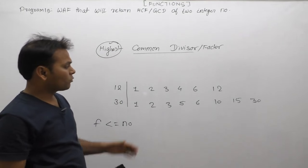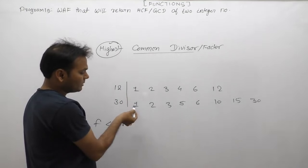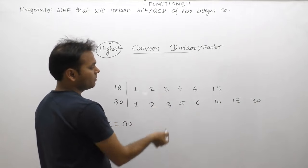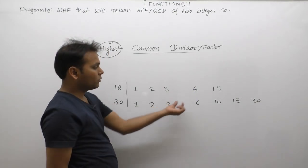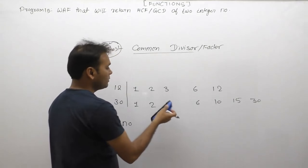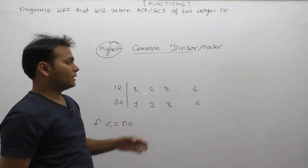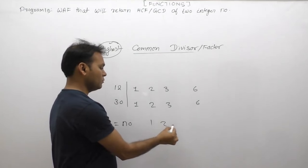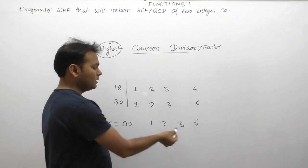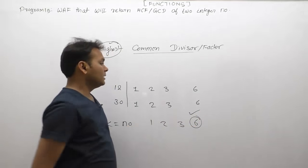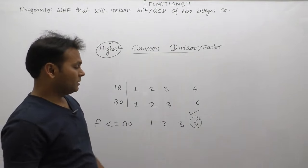Now talking about common divisors: out of all factors, the common divisors are those that divide both numbers. 1 is common, 2 is common, 3 is common, 5 is not common, 4 is not common, 6 is common — because both 12 and 30 are divisible by 6. The remaining factors like 12 can divide 12 but not 30. So the total common divisors are 1, 2, 3, and 6. The Greatest Common Divisor is 6 itself.